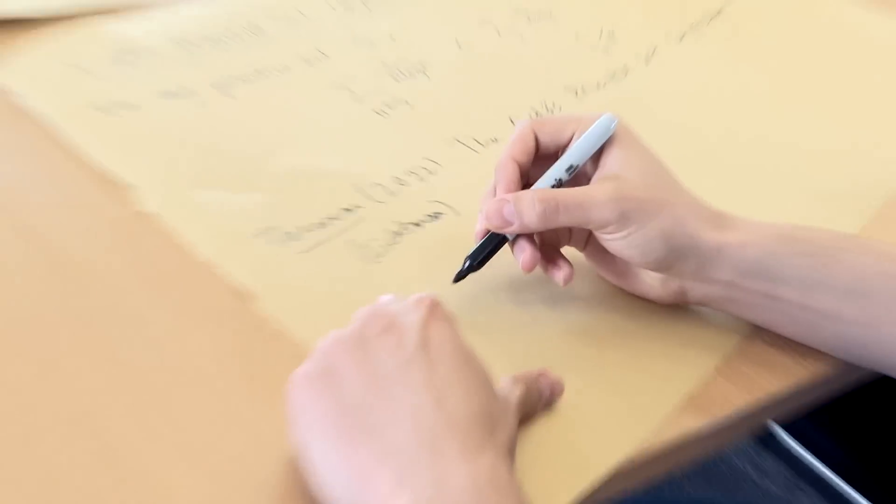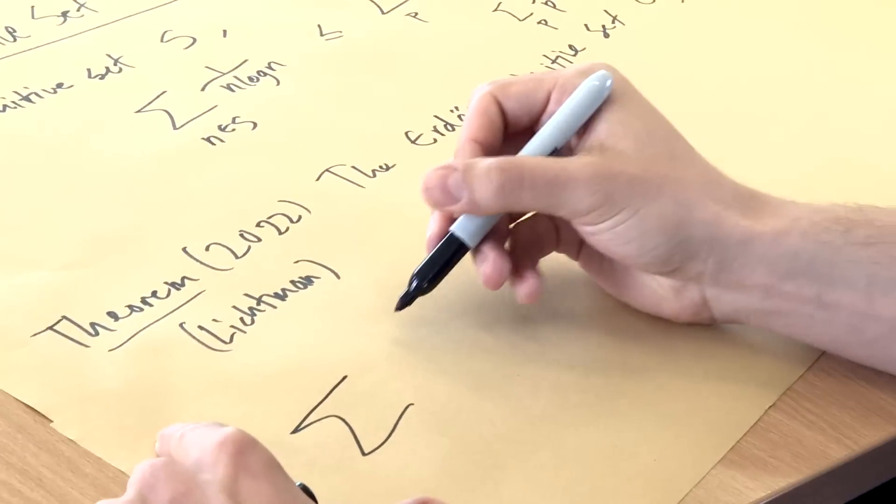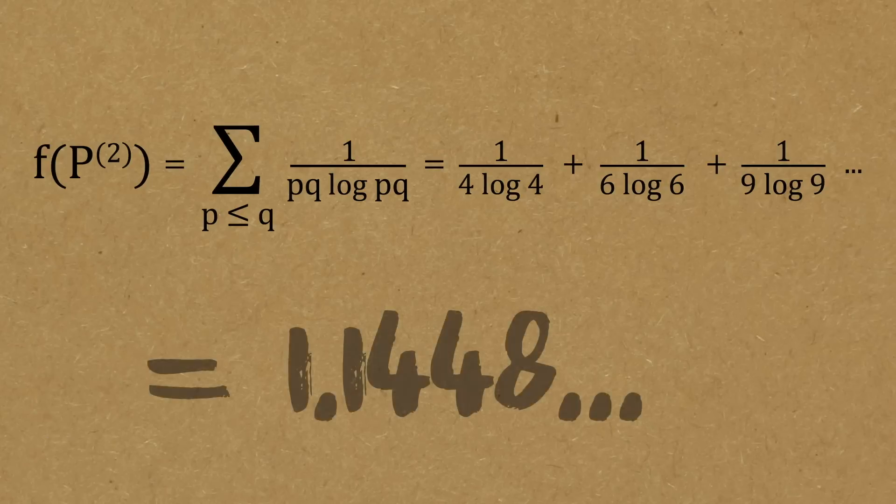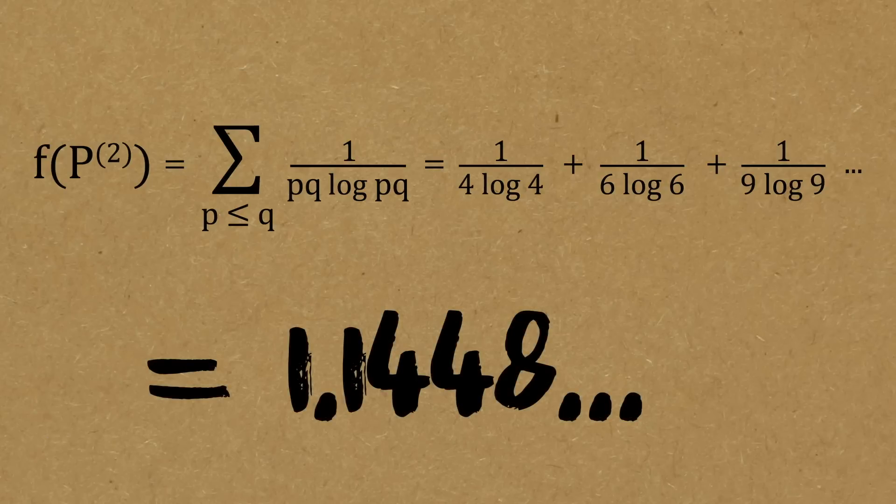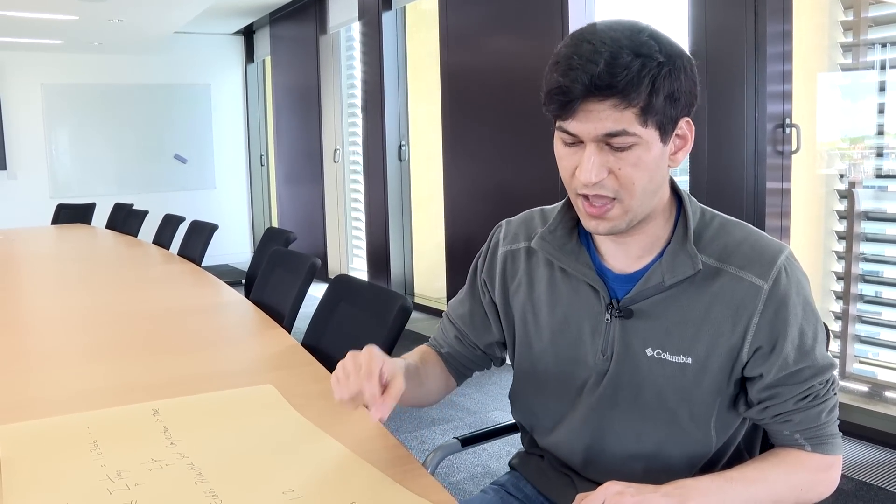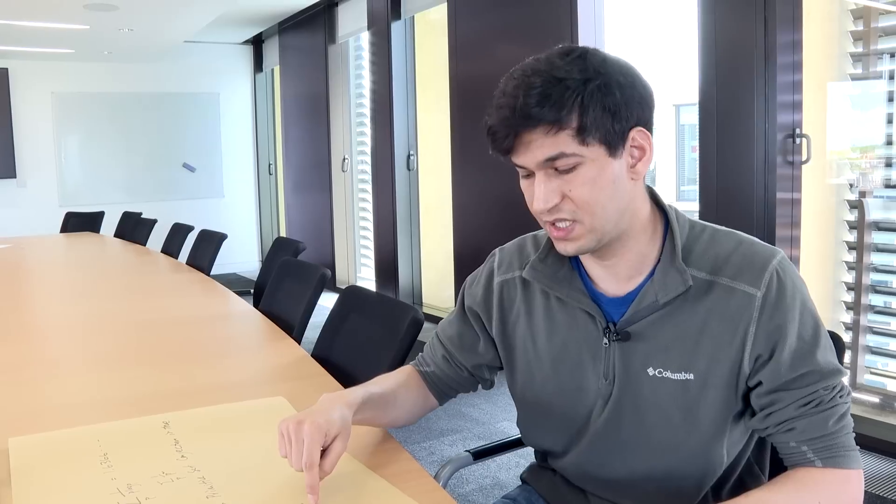What is the fingerprint number for the two prime factors? Usually we denote by p as the set of primes. And if you just look at the set, let's say p to the two power, this will be the set of numbers with two prime factors. So this is a sum. This will be 1 over 4 log 4 plus 1 over 6 log 6, etc. And you can play this game where you increase the exponent and these numbers get smaller and smaller.